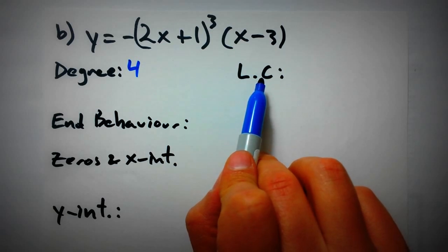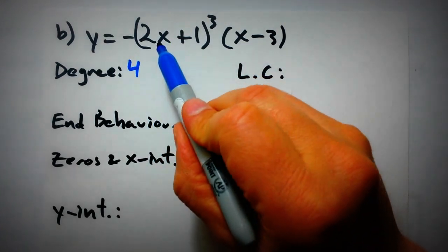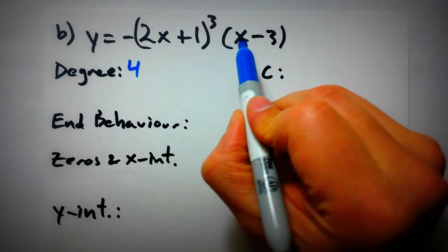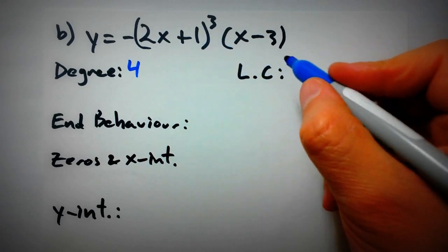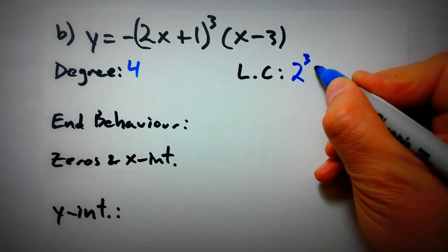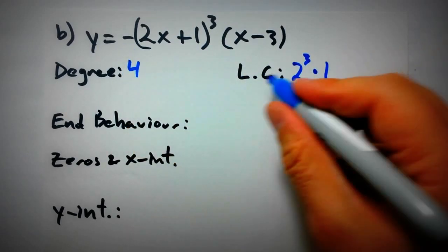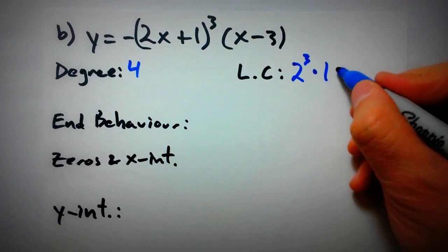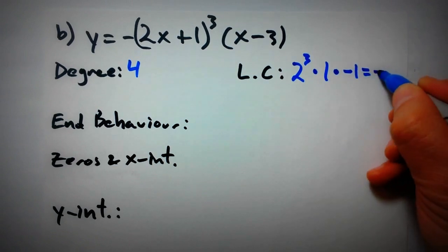Now for the leading coefficient, we multiply the coefficients in front of the x terms. We have 1 from the (x minus 3) factor and 2 inside the cubic function. Since that 2 is raised to the power of 3, we calculate 2 to the power of 3 times 1, and we must not forget the negative 1 out front. So the leading coefficient is negative 8.